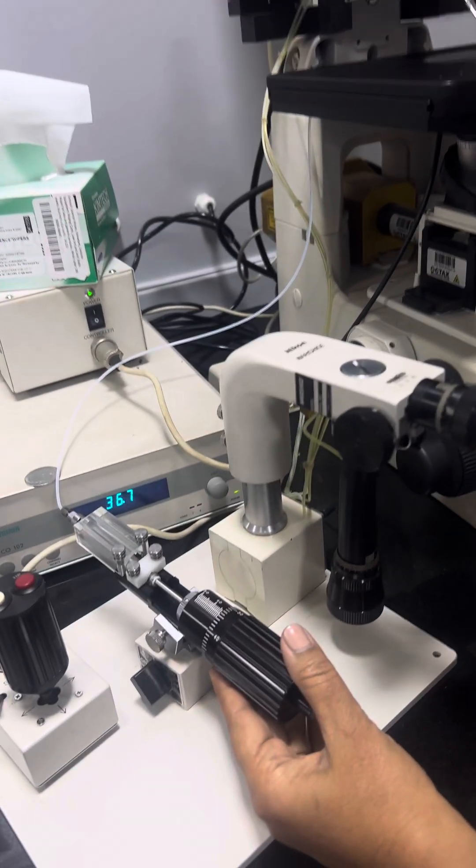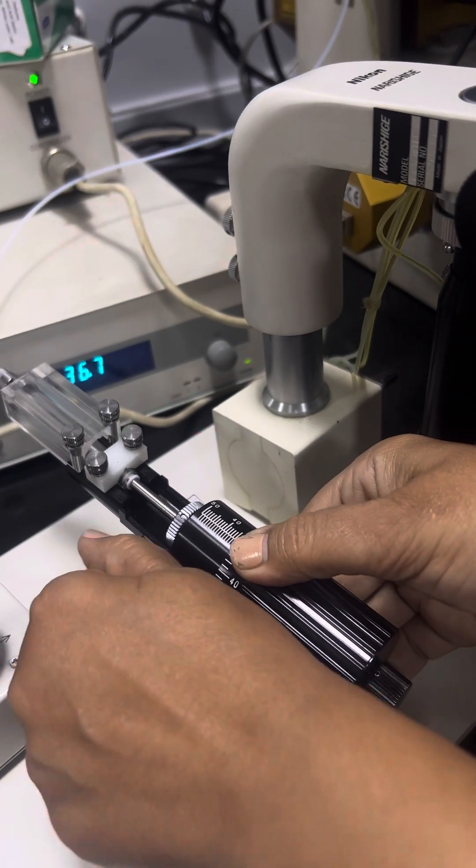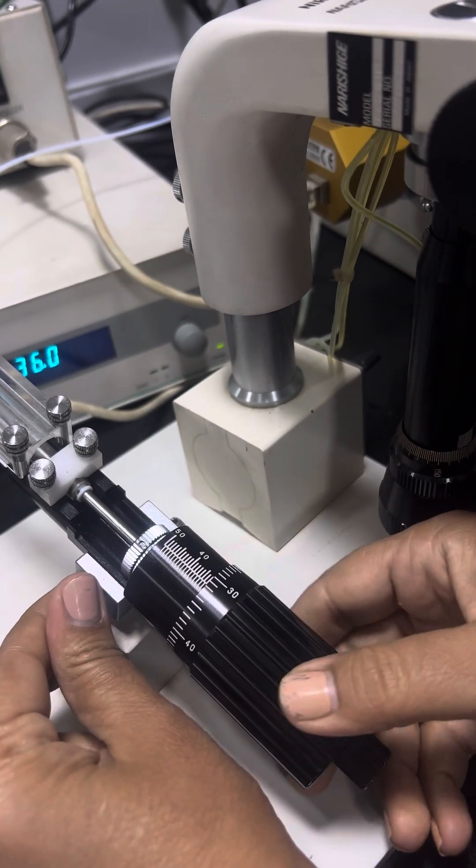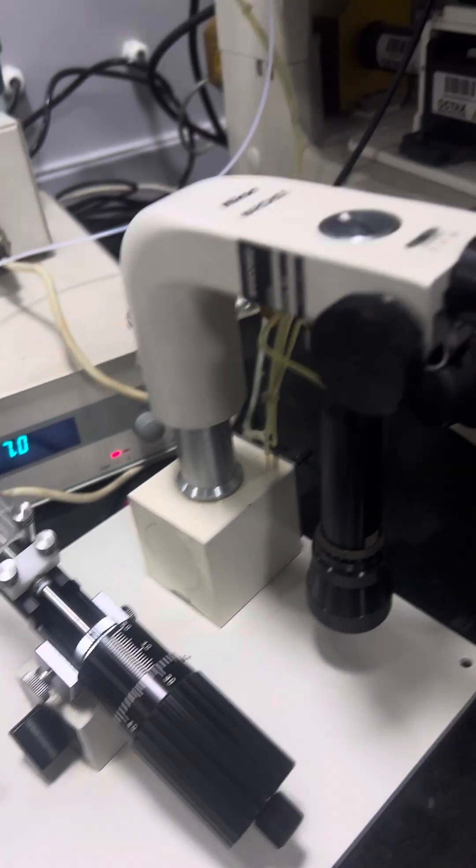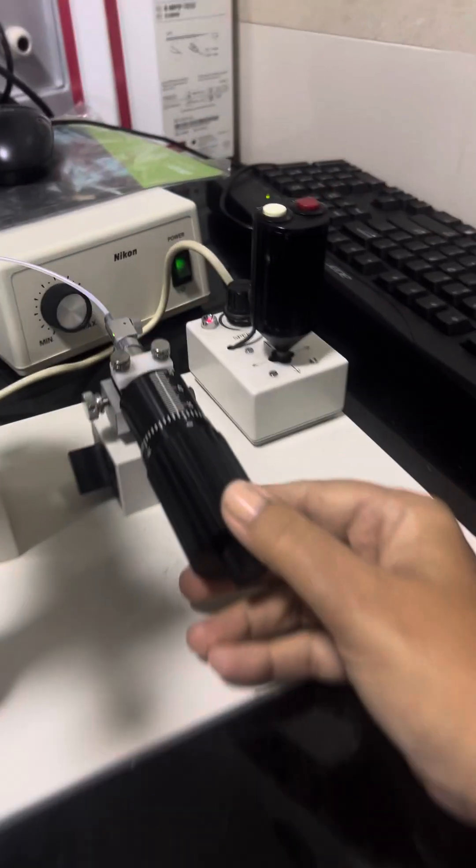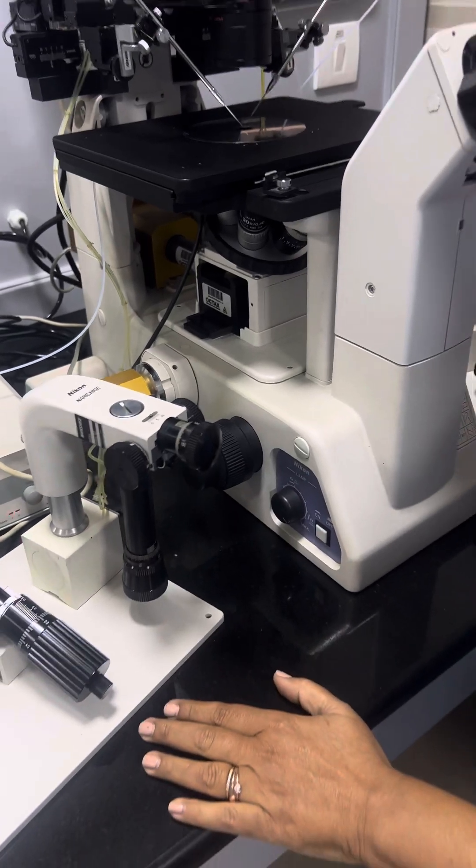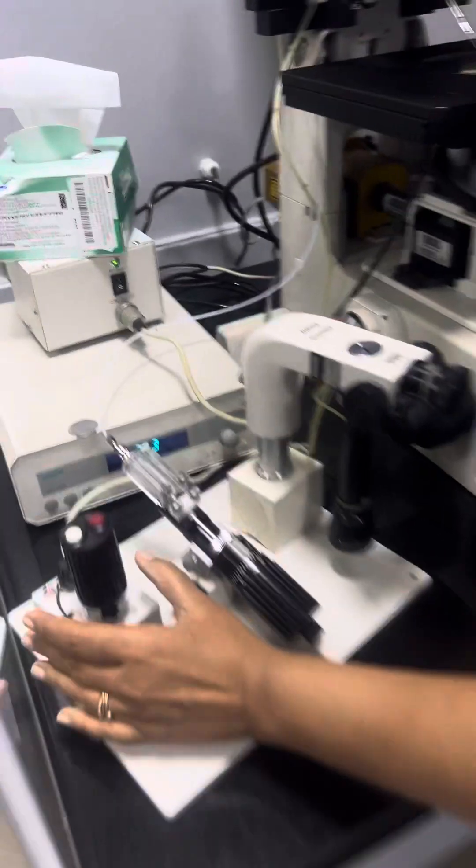This injector should be between 20 to 30. This is the hydraulic one for injection and this is the pneumatic one for holding. I use cross hands. You can use the parallel hands also. And this is the coarse adjustment.